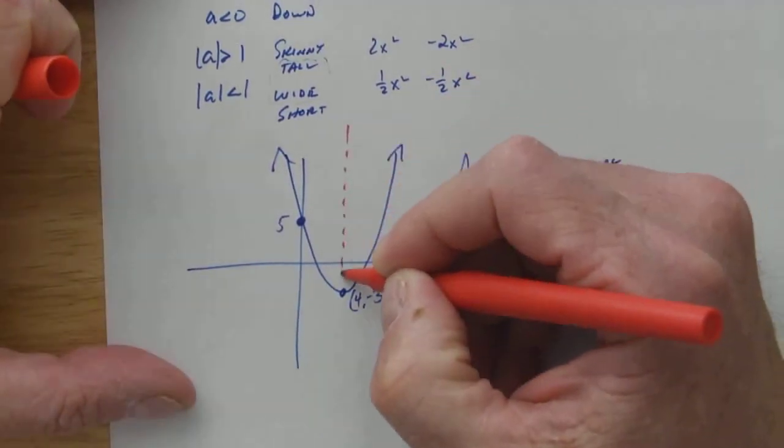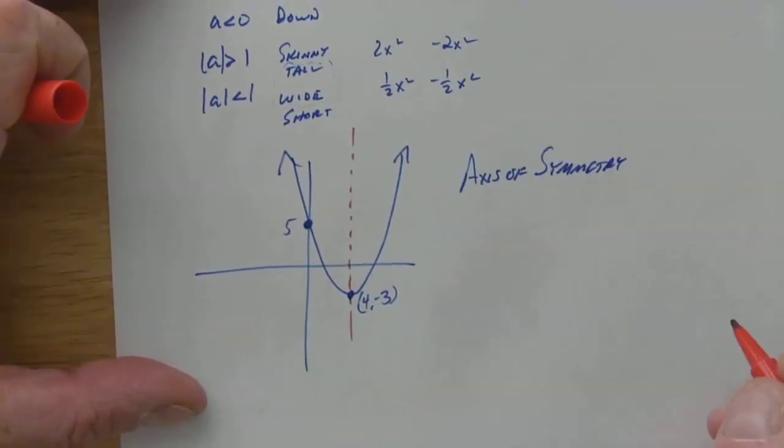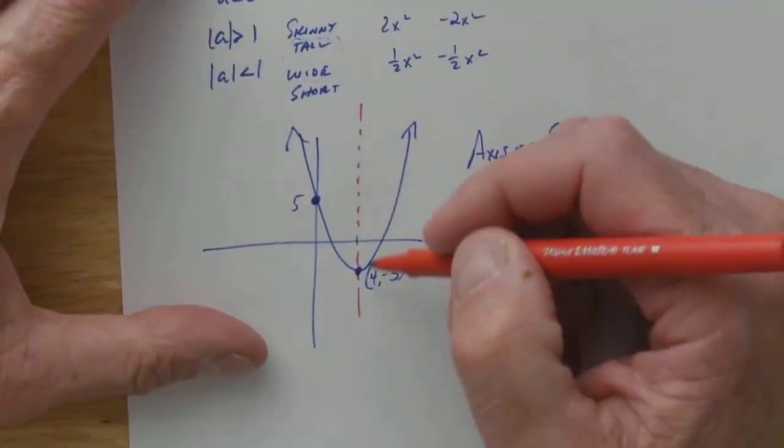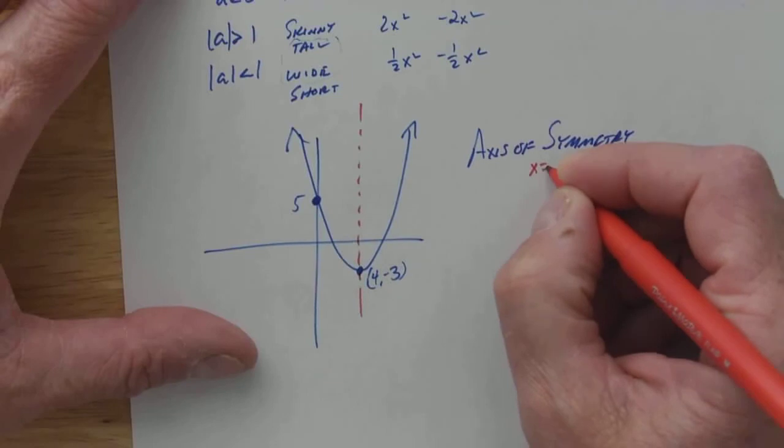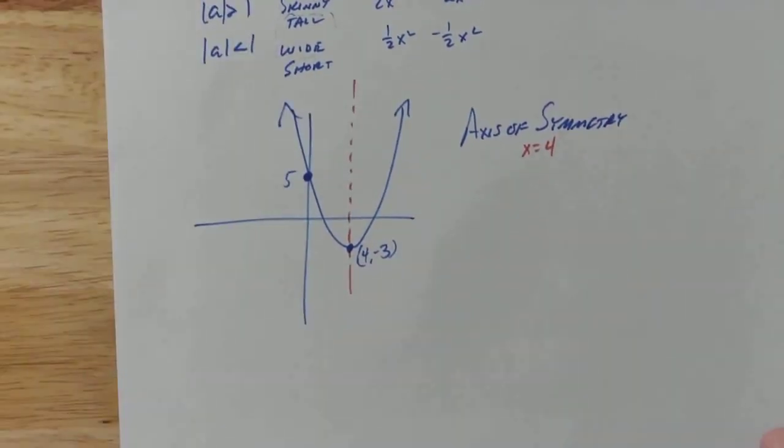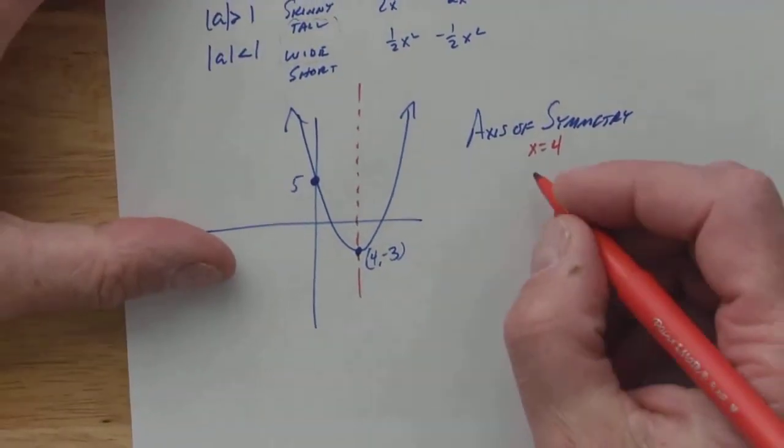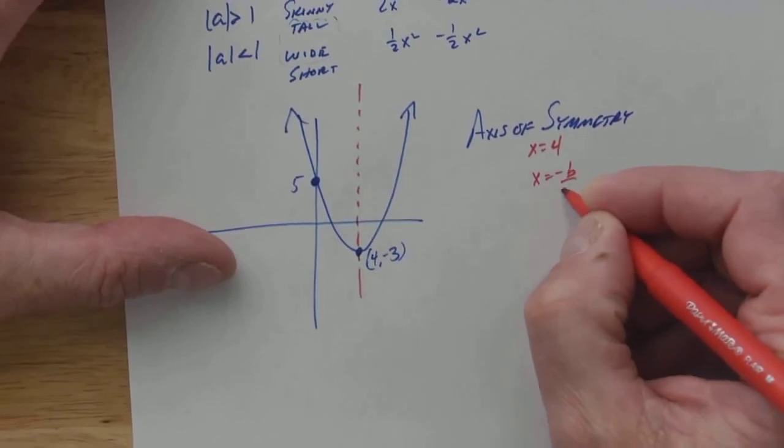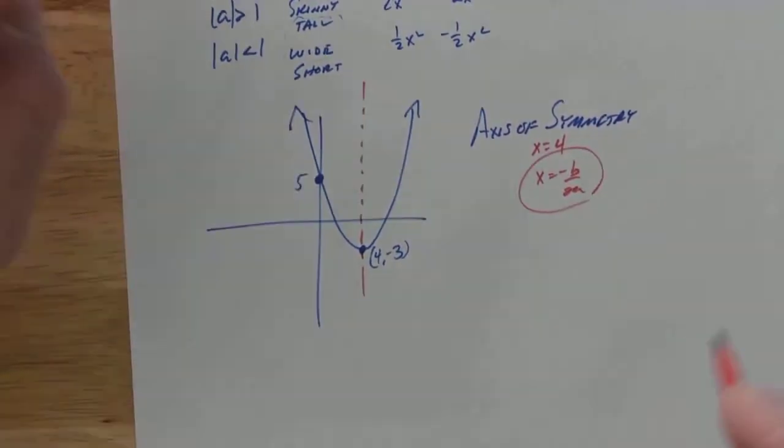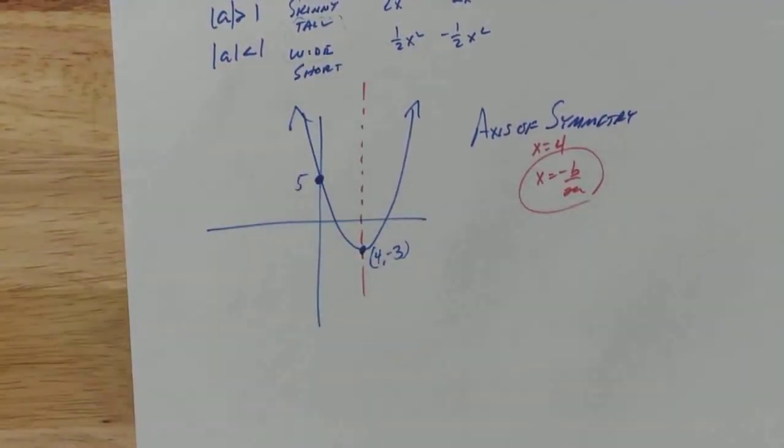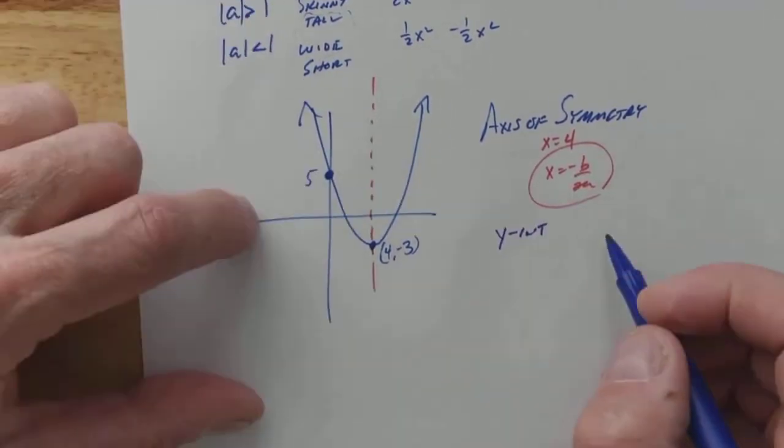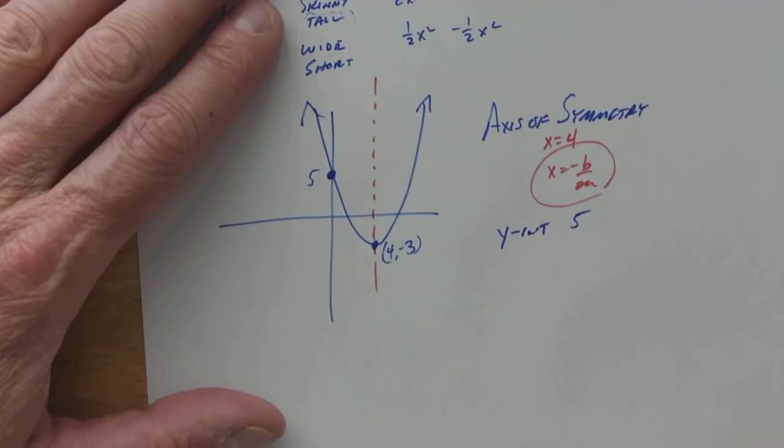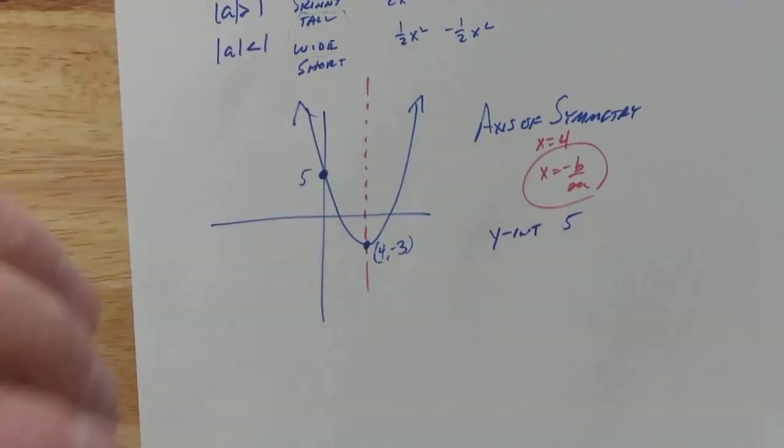They're going to ask you lots of different things. They're going to ask you, what is the axis of symmetry? Well, the axis of symmetry is a line. The axis of symmetry is this line right here. And what is the equation of this line? Well, it hits the x-axis. It goes through 4. So the equation of axis of symmetry there is x equals 4. And the axis of symmetry from what we learned yesterday was x equals negative b over 2a.